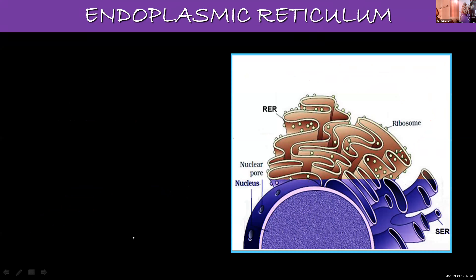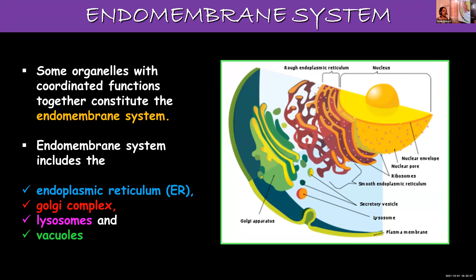First we will learn about the endoplasmic reticulum, starting with the first one. In class 9 you had learned about endoplasmic reticulum. Are you remembering what you learned? What are the two types of endoplasmic reticulum? Smooth and rough endoplasmic reticulum.